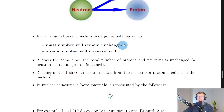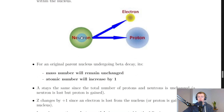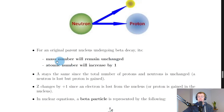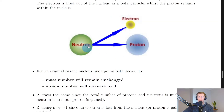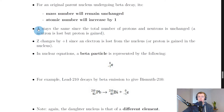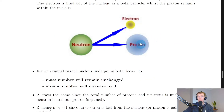For an original parent nucleus undergoing beta decay, its mass number will remain unchanged and the atomic number will increase by one. The mass number stays the same because although one neutron is converted into a proton, the total number of protons and neutrons is unchanged. The atomic number increases by one because we've gained a proton. You could also think of it as losing a negative charge — the electron — which means the nucleus effectively gains a positive charge.